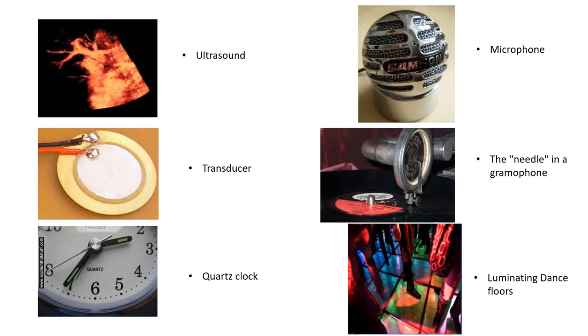The needle in the gramophone, sometimes called a record player, works in the opposite way. As the diamond-tipped needle rides along the spiral grooves in the LP, it bumps up and down. These vibrations push and pull on a lightweight piezoelectric crystal, producing electrical signals that your stereo then converts back into audible sounds.